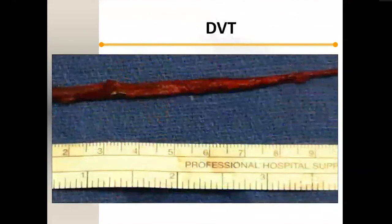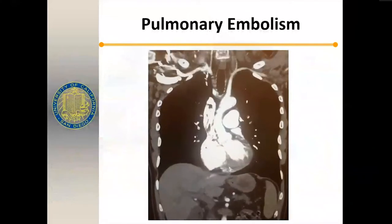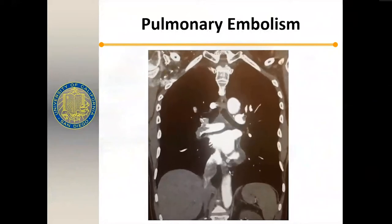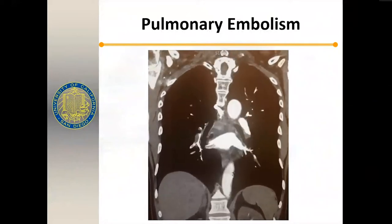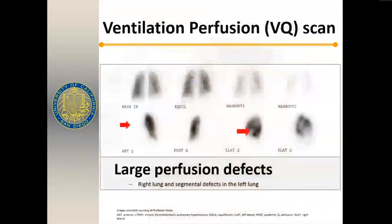This is our deep venous thrombus. This is often a presentation where we see a CT scan showing a patient with a large burden of emboli in the pulmonary arteries. If we follow these patients further, we can do a ventilation perfusion scan, which reveals absence of perfusion to the right lung with normal ventilation, and large perfusion defects in the left lower lobe.